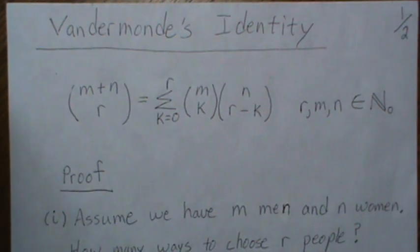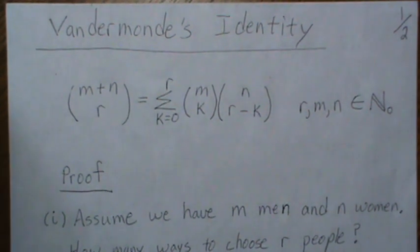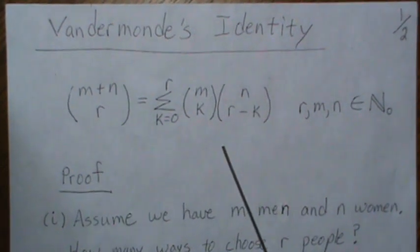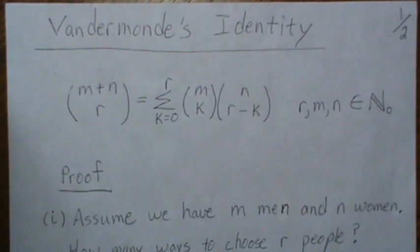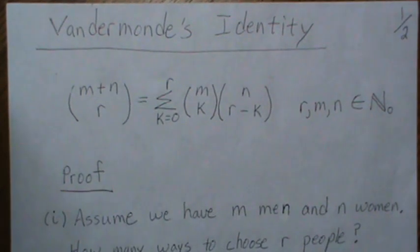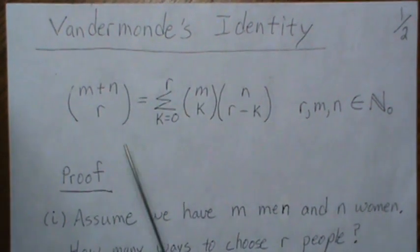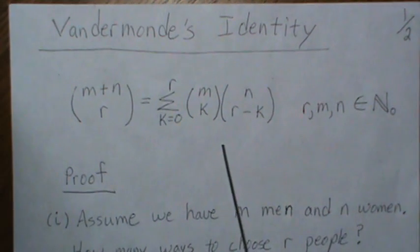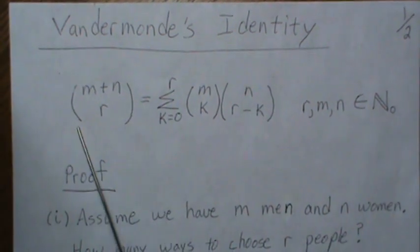Hello, in this video we're going to look at Vandermonde's identity, which has to deal with combinations. The reason we're going to look at this is it will help us when we calculate the mean and variance of a hypergeometric distribution.